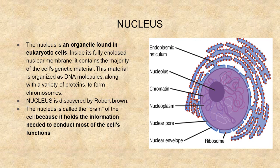The nucleus is an organelle found in eukaryotic cells. Inside its fully enclosed nuclear membrane, it contains the majority of the cell's genetic material. This material is organized as DNA molecules along with a variety of proteins to form chromosomes. The nucleus was discovered by Robert Brown. The nucleus is called the brain of the cell because it holds the information needed to conduct most of the cell's functions.